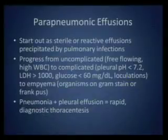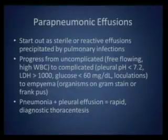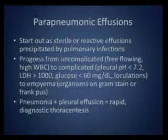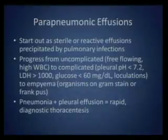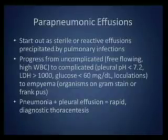It will go from an uncomplicated free-flowing high white count effusion to a complicated effusion where your pH is going to be low - that's a sign of infection, if it's less than 7.3 it's infected. Your glucose is going to be low, your LDH is going to be high. Then you subsequently develop loculation. So if they give you a pleural fluid analysis that says glucose is 80, pH is 7.1, and LDH is 900 - it's infected. That's not normal.